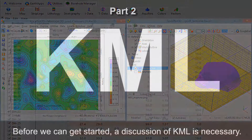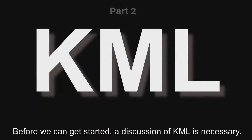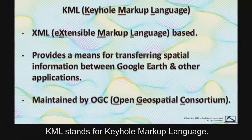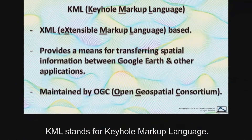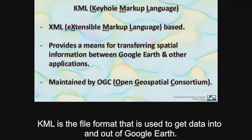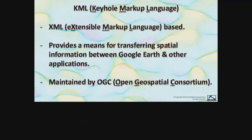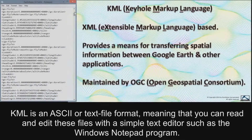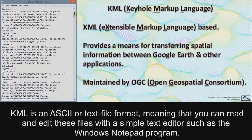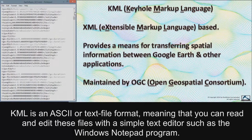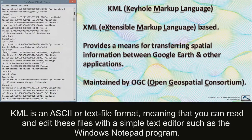Before we can get started, a discussion of KML is necessary. KML stands for Keyhole Markup Language. KML is the file format used to get data into and out of Google Earth. KML is an ASCII or text file format, meaning that you can read and edit these files with a simple text editor such as the Windows Notepad program.